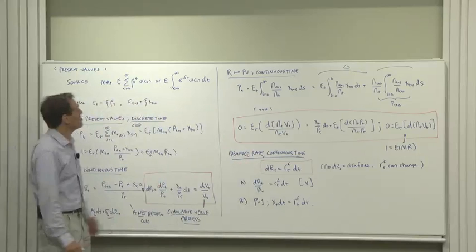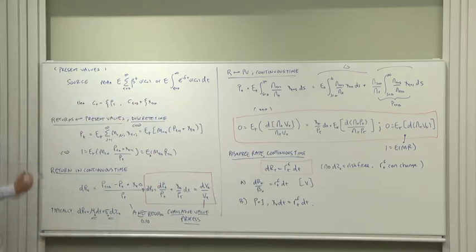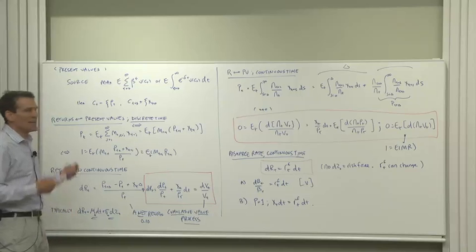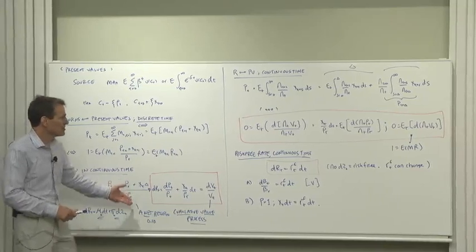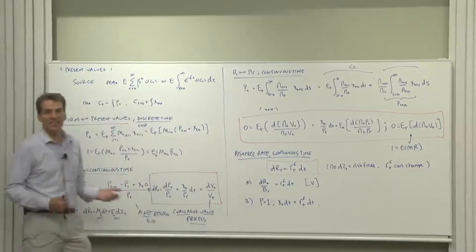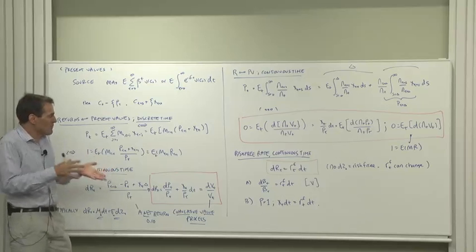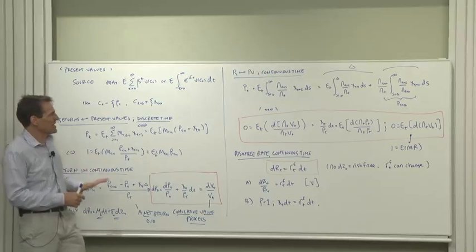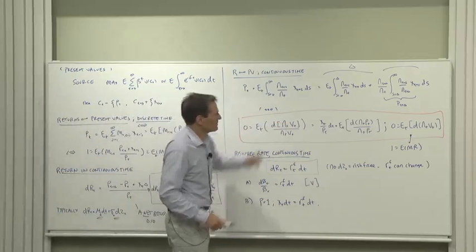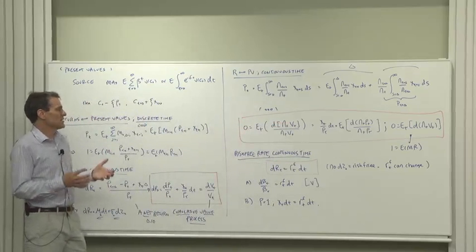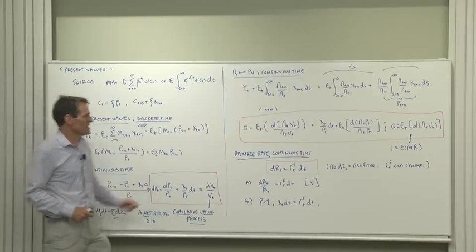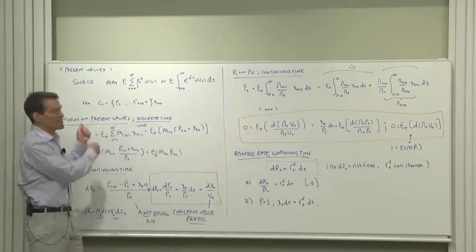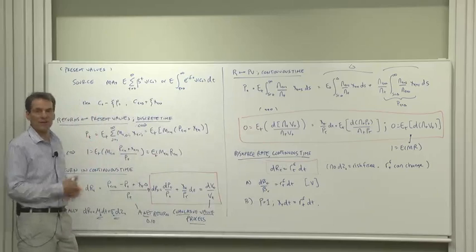What have we done? We've taken our basic ideas of price equals expected discounted payoff and re-expressed them in terms of returns, excess returns, present values, and returns and risk-free rates in continuous time. Once you've met those characters and seen how our basic asset pricing formula applies to them, then you're ready to see the classic statements of the theory of finance about how returns, excess returns, discrete time, and continuous time are determined in how they behave.